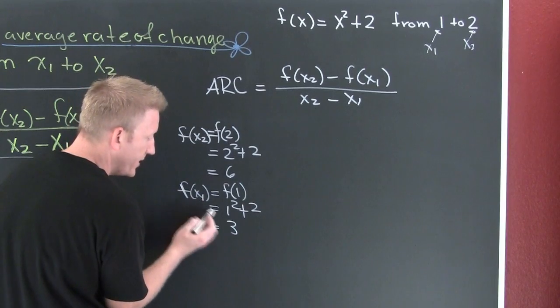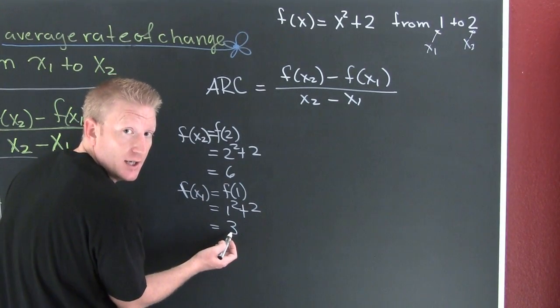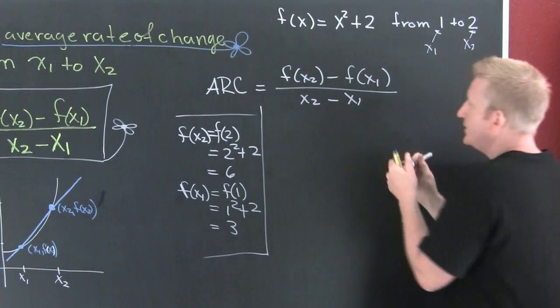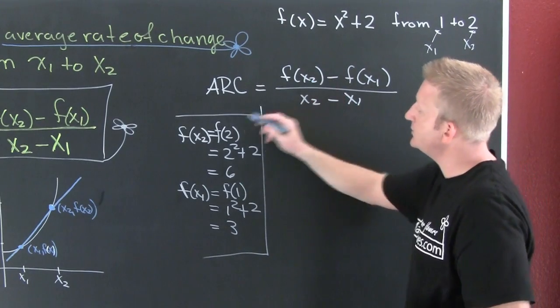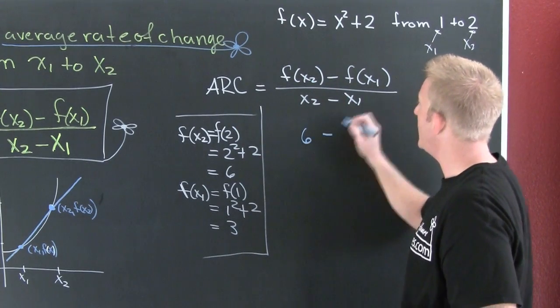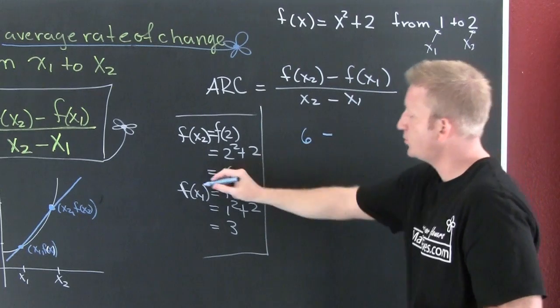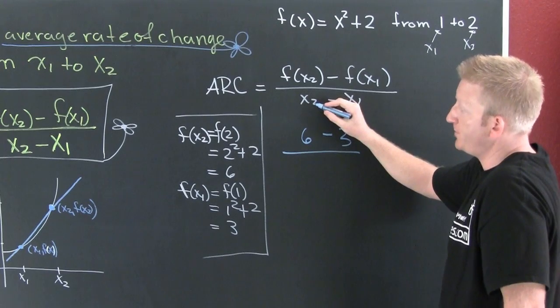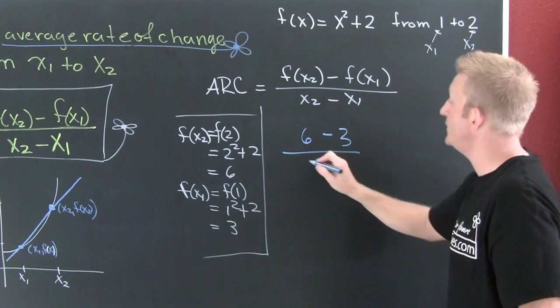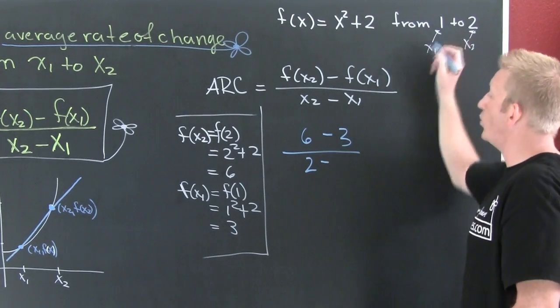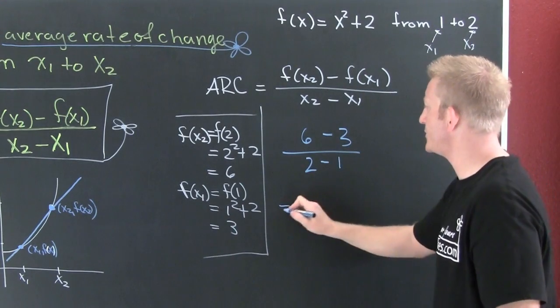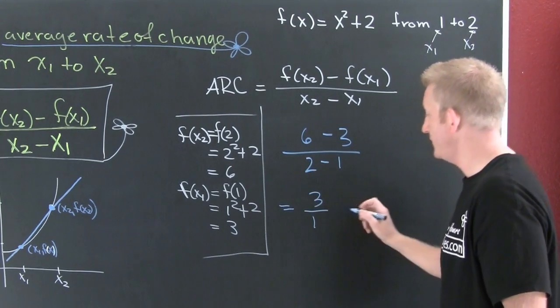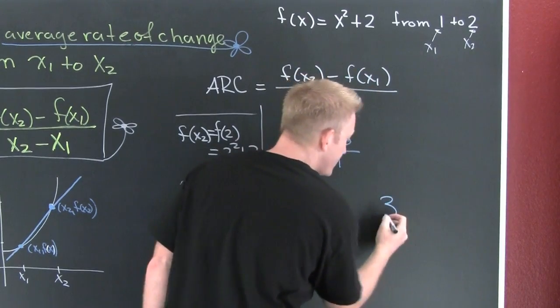So f of x2 is 6, f of x1 is 3. Now I'm gonna plug it in. What was my f of x2? 6. Minus f of x1, which was 3. Divided by x2, which was 2, minus x1, which was 1. 6 minus 3 is 3 divided by 1. And then your answer is 3.